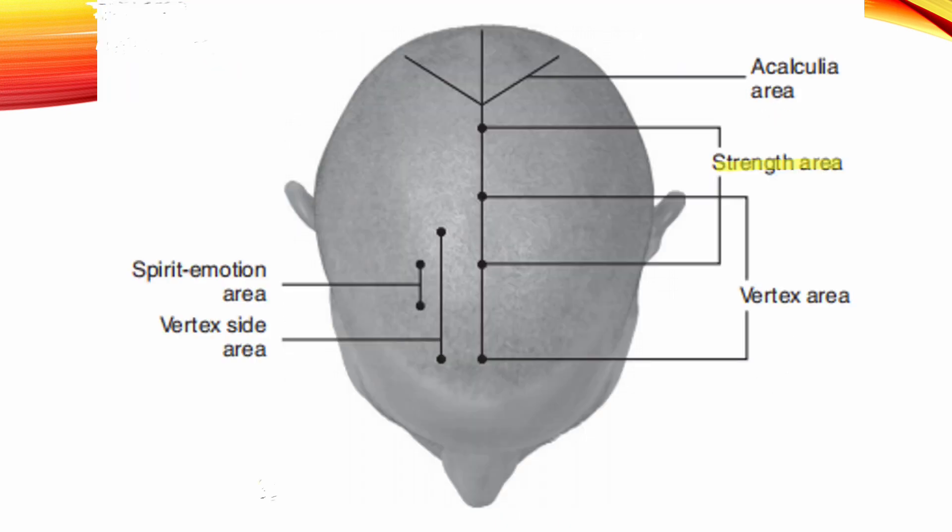Strength Area. Location: 3 cm in length, extending anterior and posterior from DU 20. Indication: Neurosis.